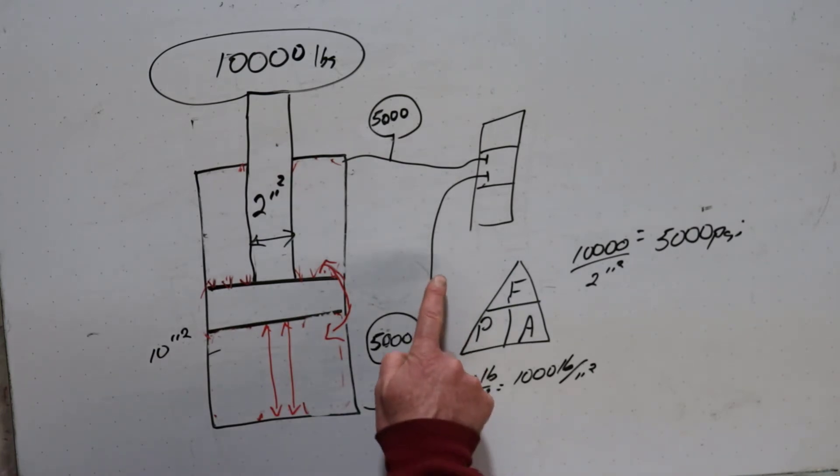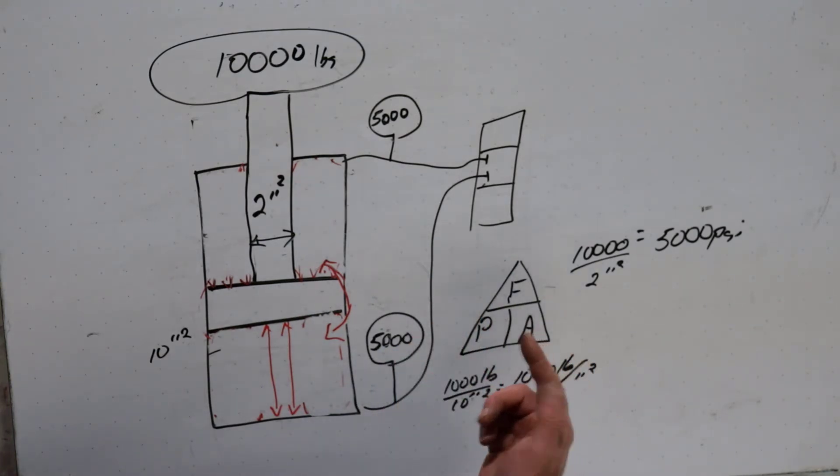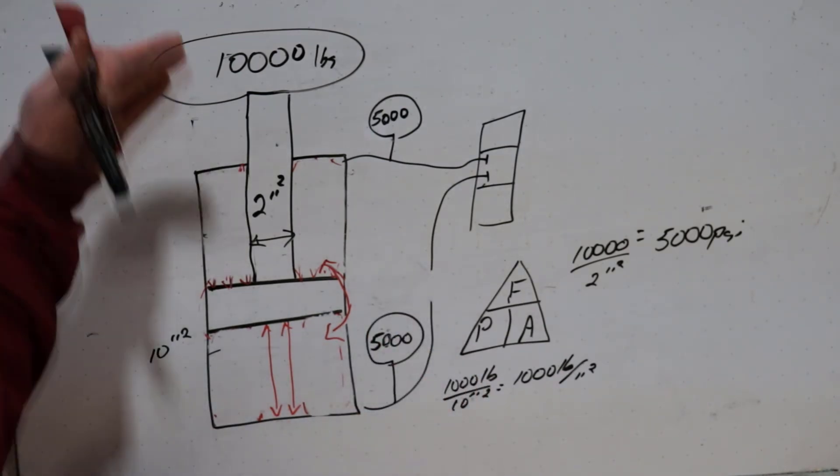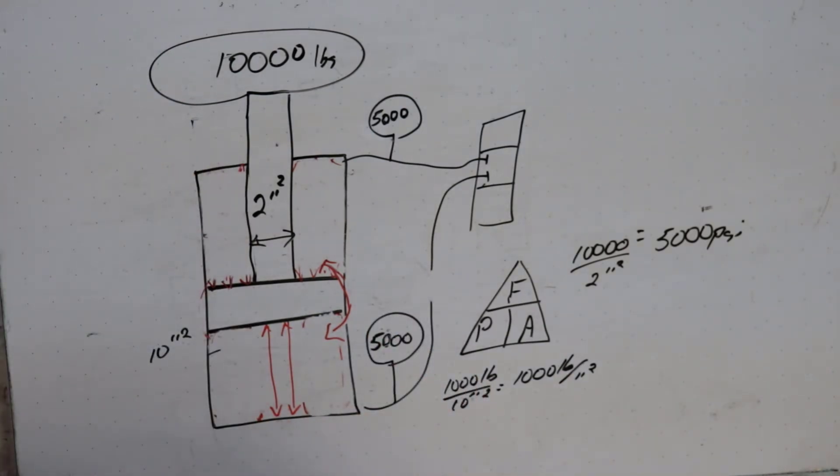So if a line bursts, let's say the lines are only good for 3,000 psi and the line ruptures, the load free falls to the ground, doing damage or killing us. So pressure intensification is something to be aware of and very cautious of.